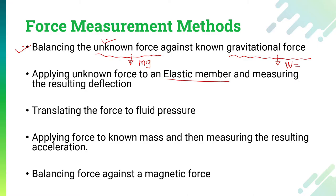The third way to measure force is to translate any kind of force into fluid pressure and then measure that pressure. The pressure can be in terms of hydraulic pressure or pneumatic pressure, and such pressure can be measured using cells. These load cells are known as hydraulic cells as well as pneumatic cells. We will understand the working principle of those cells in the later part of this lecture series.